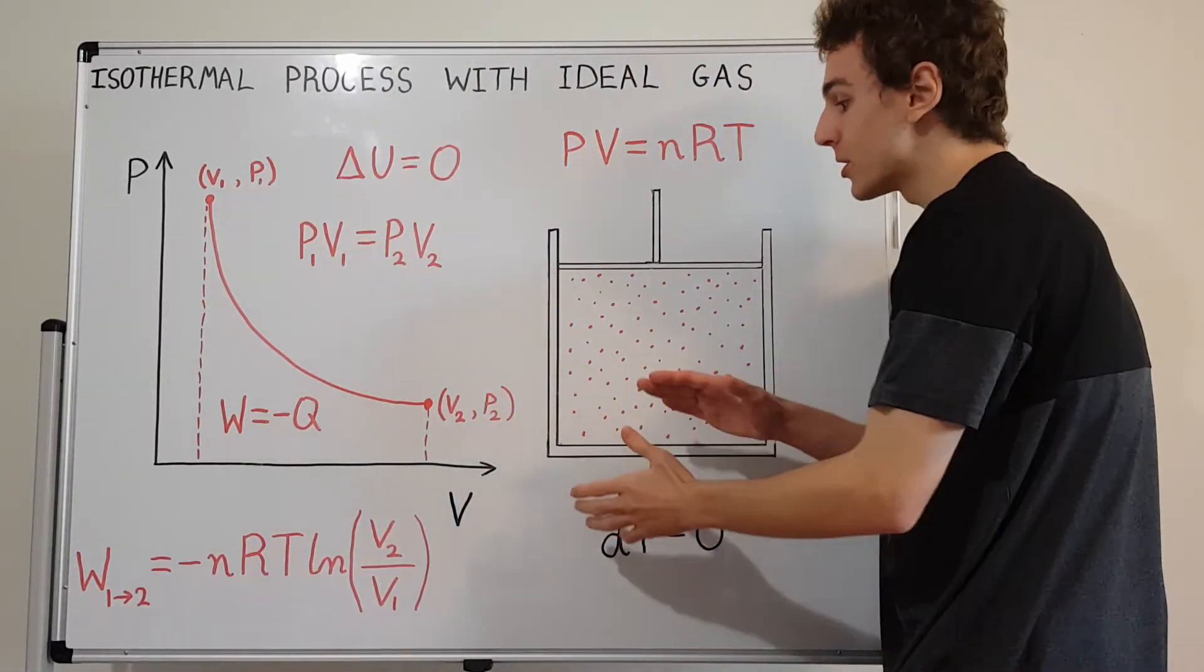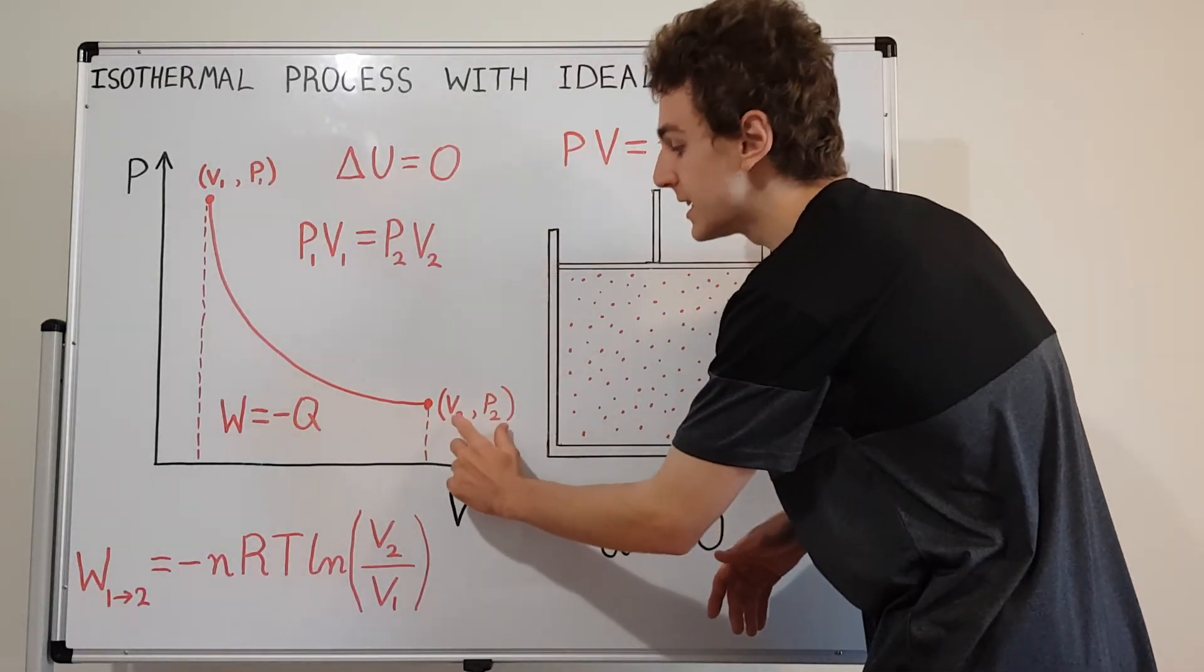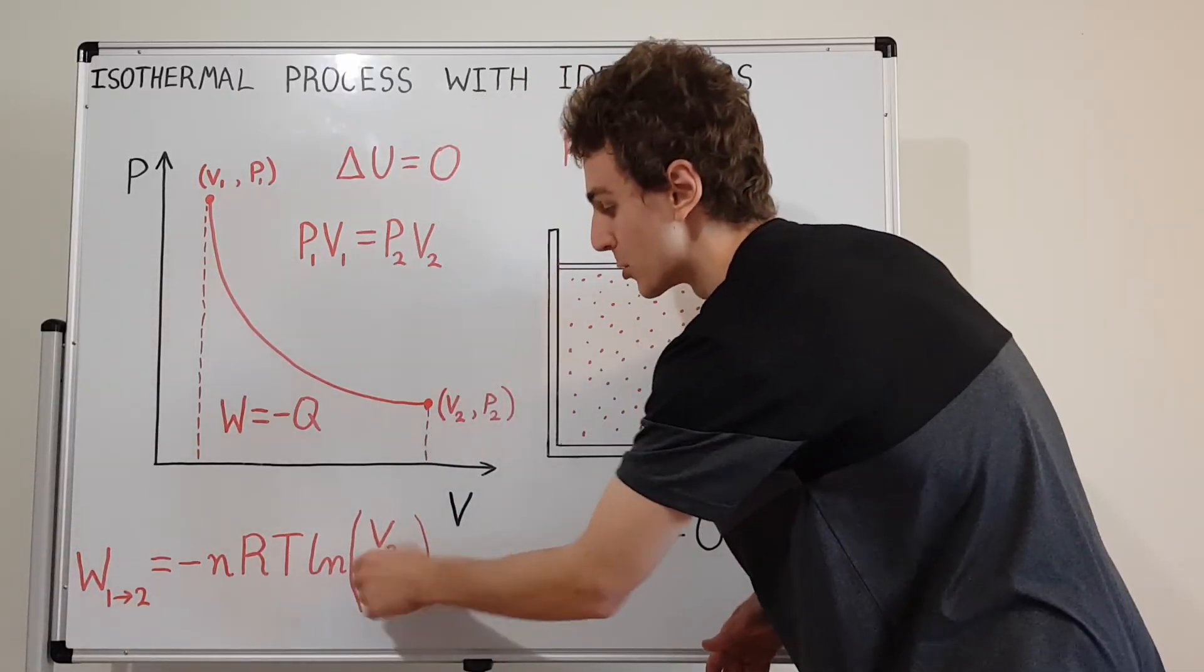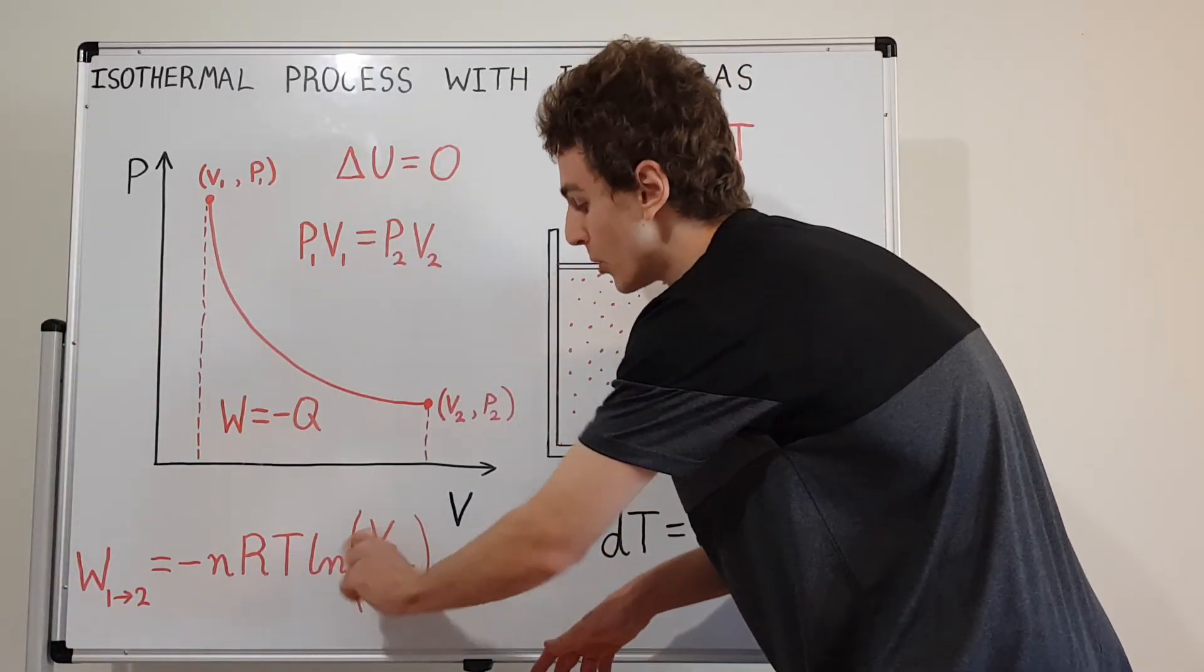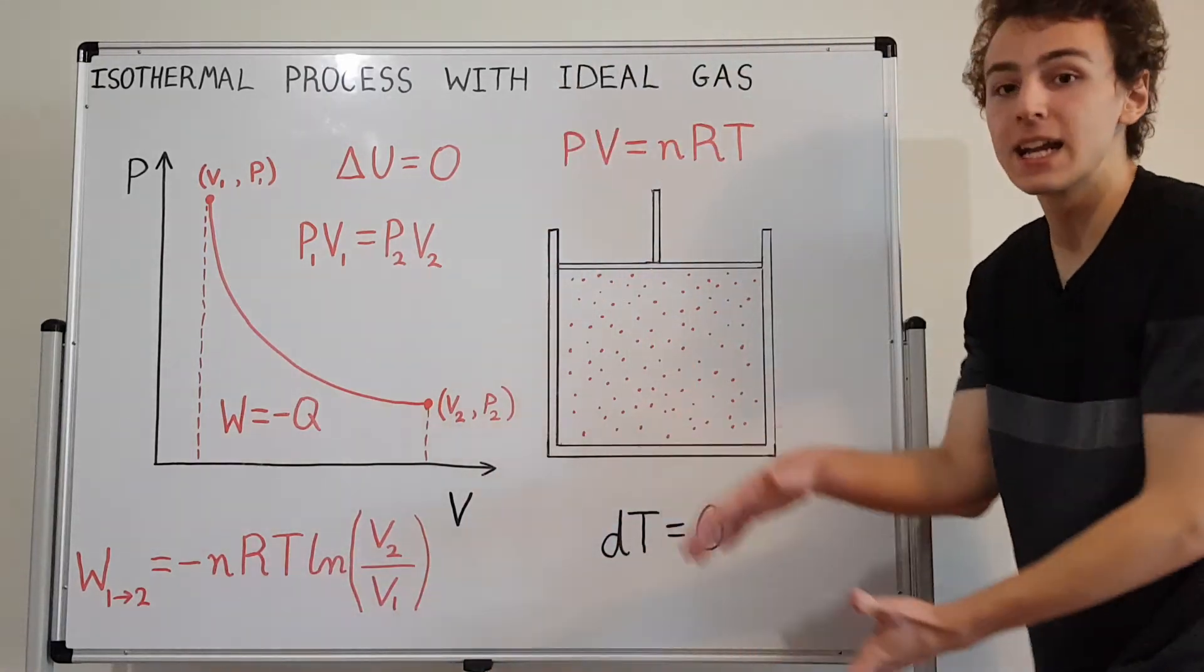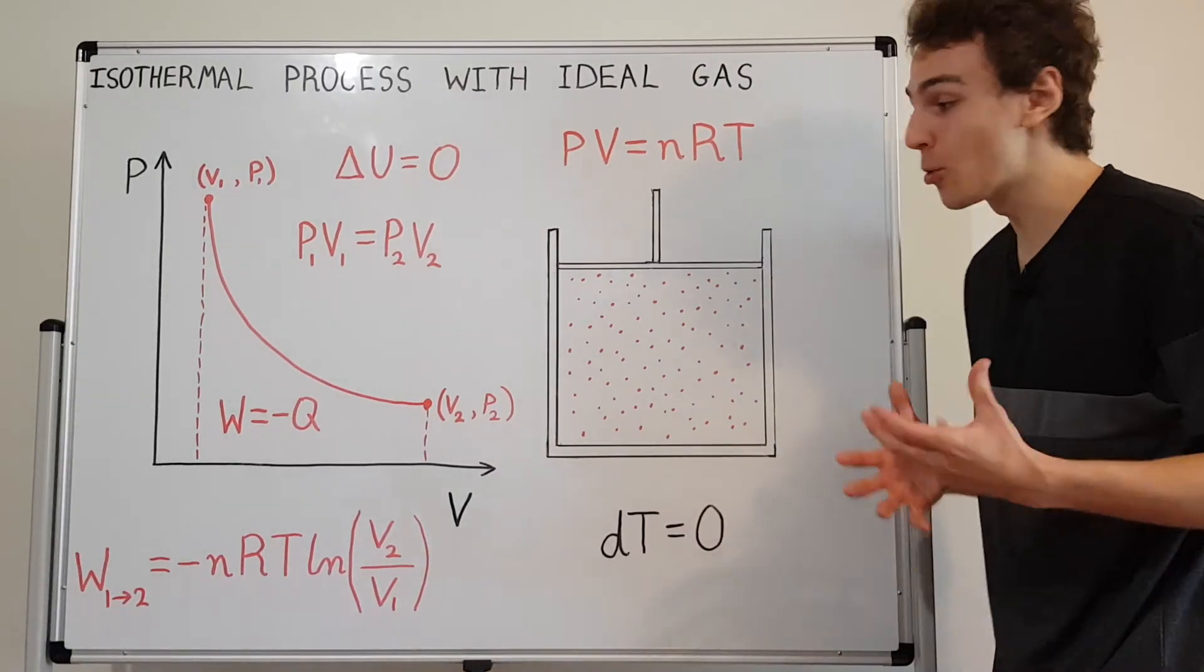If we wanted the reverse, which we just described before, the compression situation, then we would switch these guys around and we would have the work from two to one. So we'd have to switch these guys around. And when you switch this, when you take the reciprocal inside the natural log, that gives you a negative sign. And those negatives cancel, and so you get positive work. So it all works out.